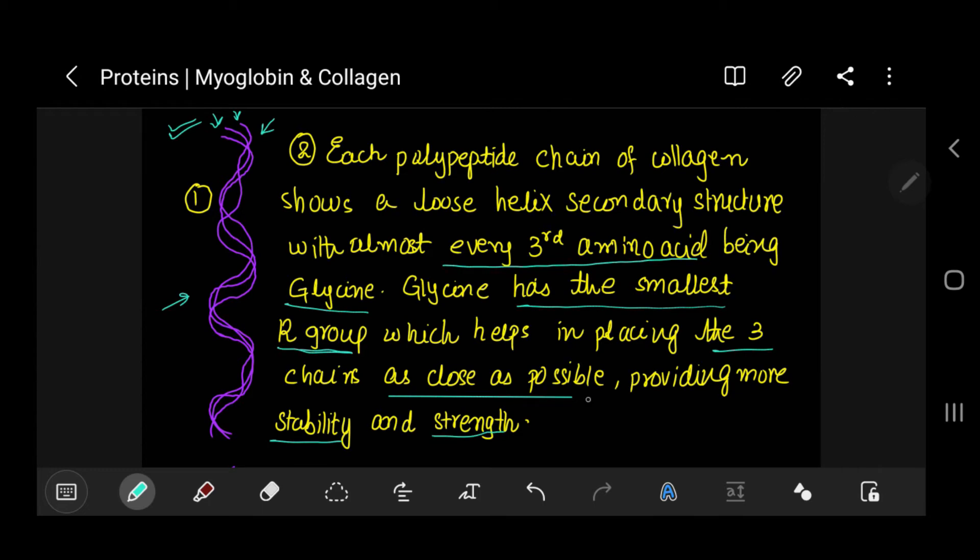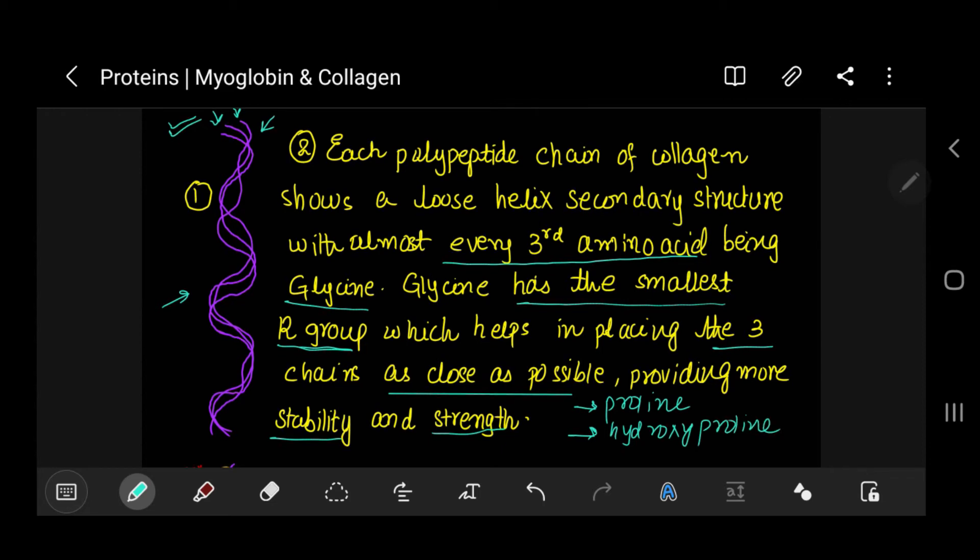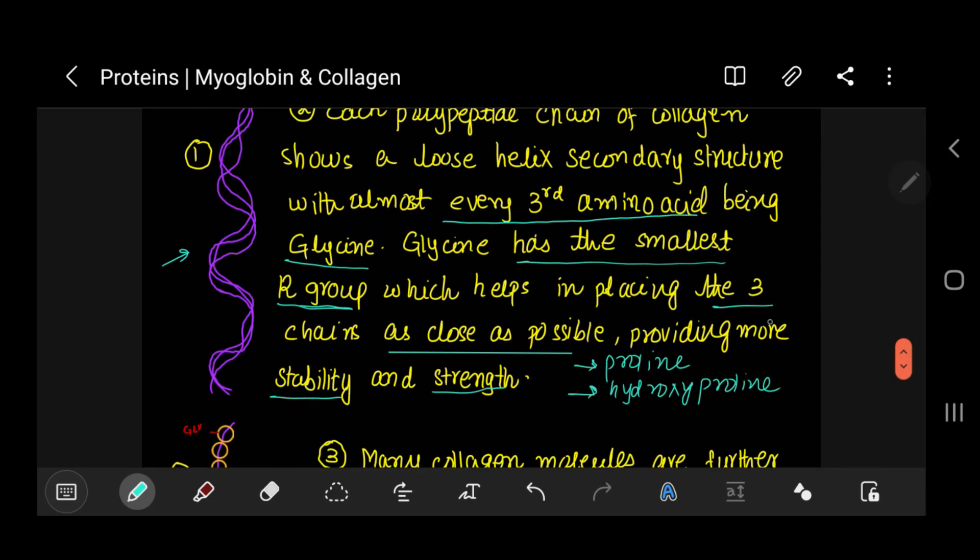Collagen also contains high proportions of amino acids. The two amino acids, one is proline, and the other is hydroxyproline. The R groups in these amino acids repel each other and it leads to the stability, it adds to the stability of collagen.